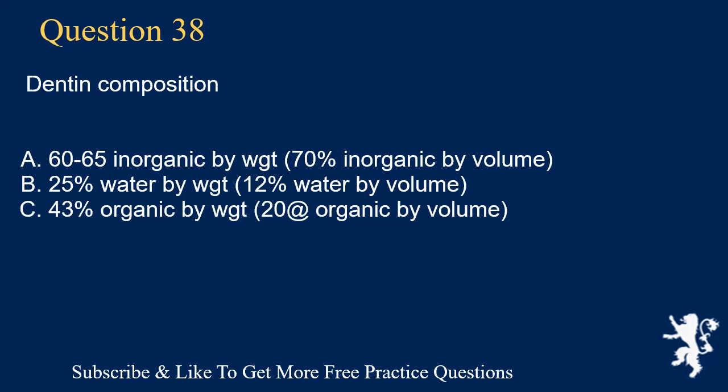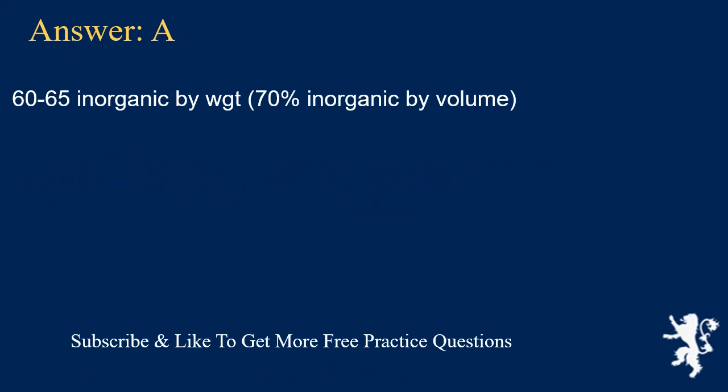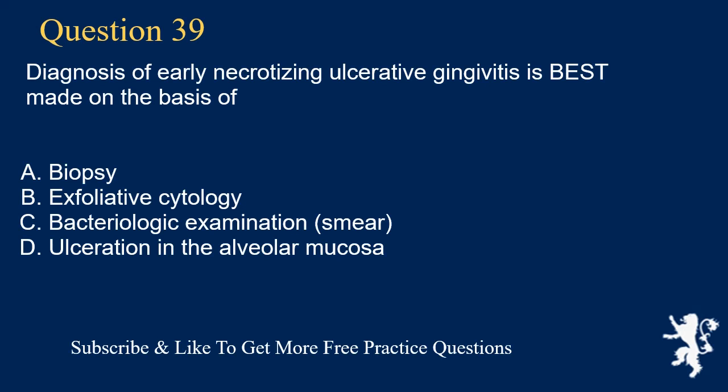Question 38. Dentin composition: A. 60-65% inorganic by weight, 70% inorganic by volume, B. 25% water by weight, 12% water by volume, C. 43% organic by weight, 20% organic by volume. Answer: A. 60-65% inorganic by weight, 70% inorganic by volume.